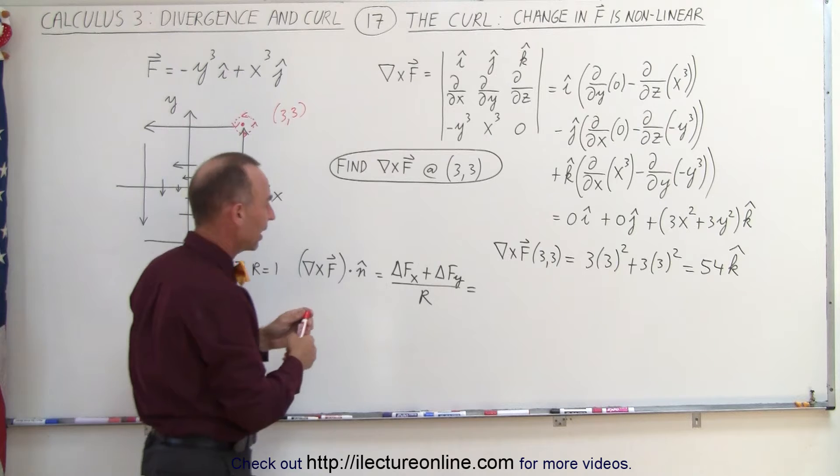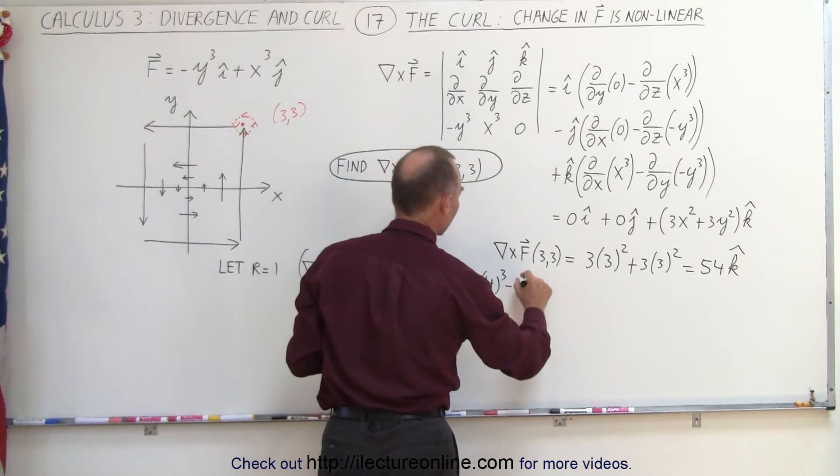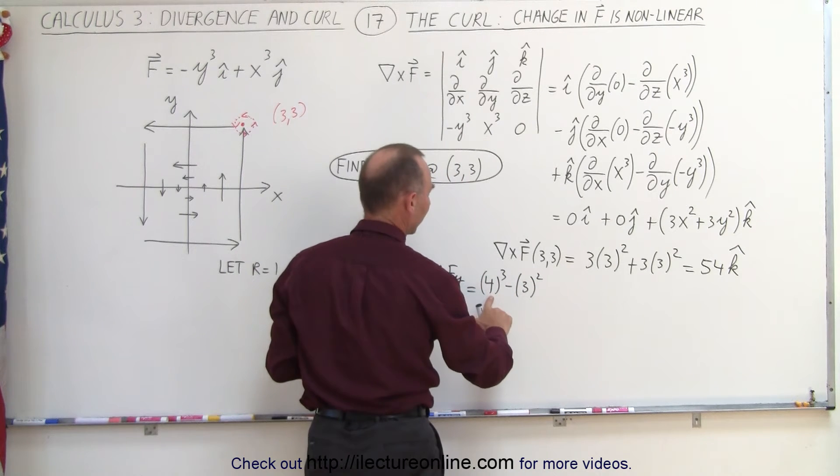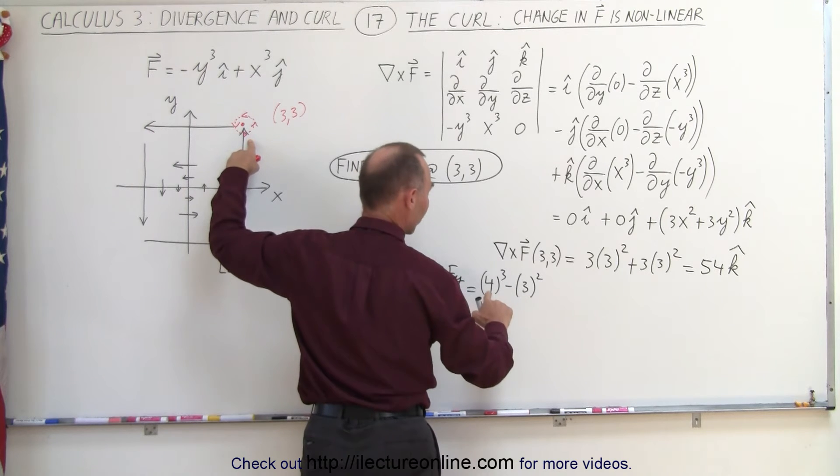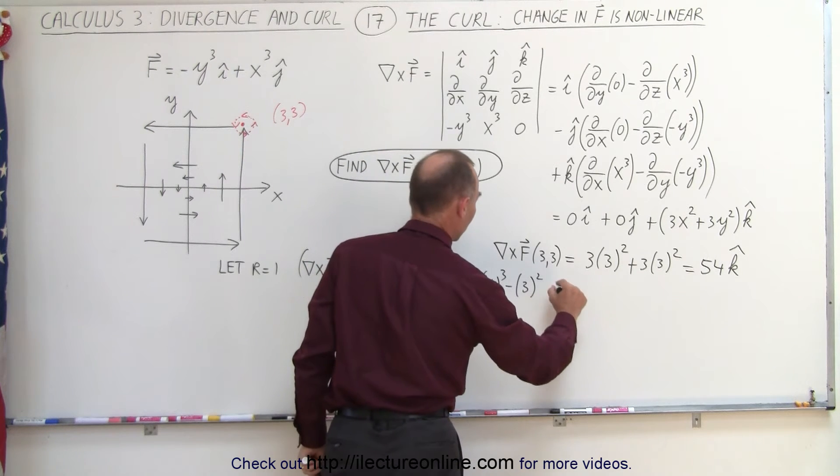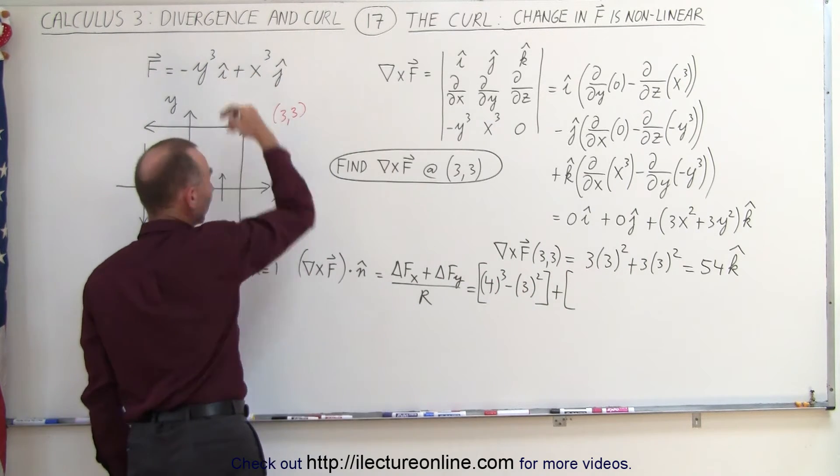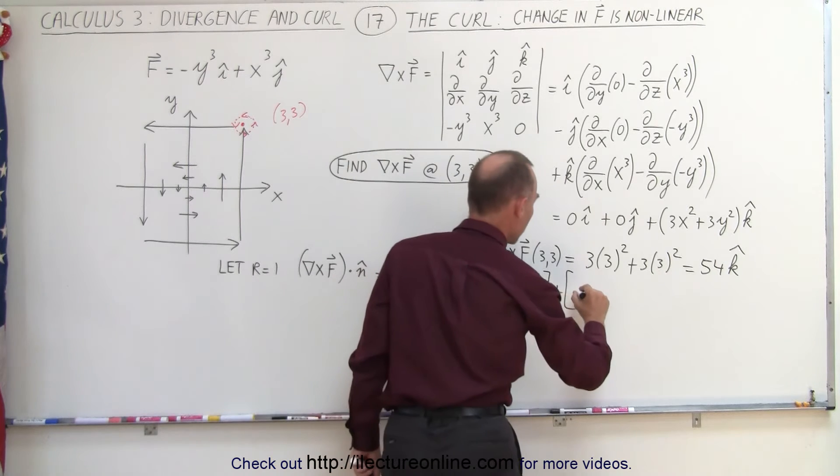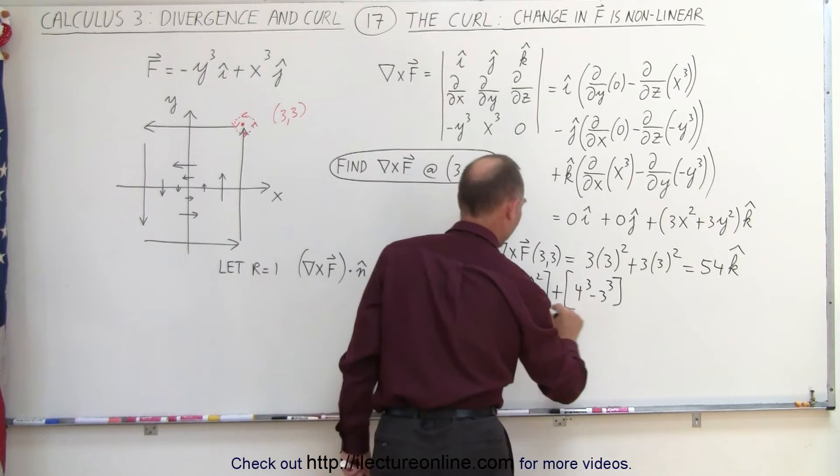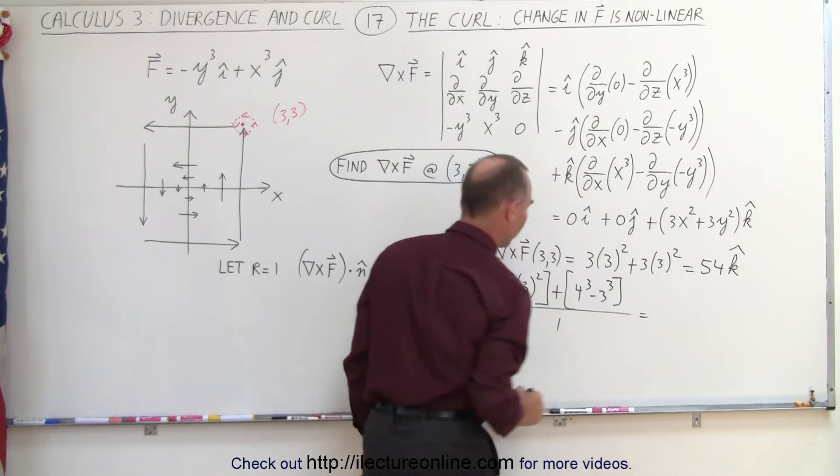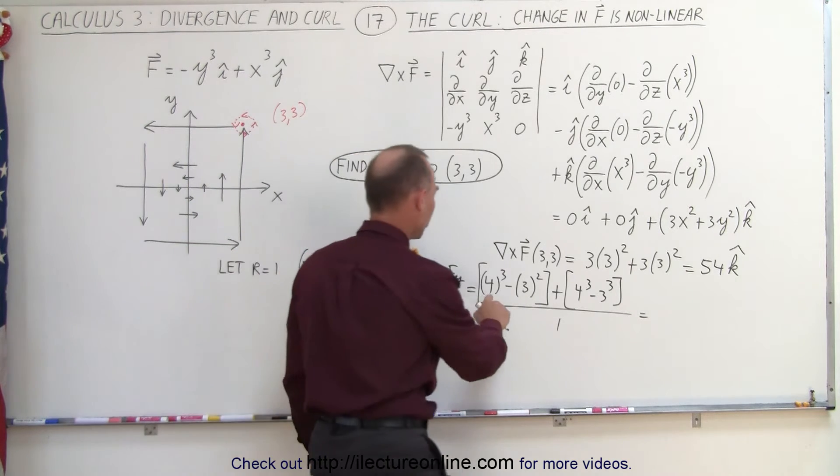So I can say that that means I go to 4 cubed minus 3 cubed, because I change from the vector field, the value, well, I go from 3 to 4, so I go 4 cubed minus 3 cubed, and add to that how much the vector field changes when I move in the y direction by one unit, and that will also be 4 cubed minus 3 cubed, and the whole thing divided by a movement of one unit.